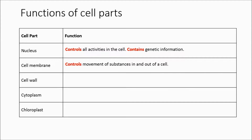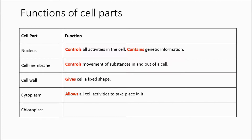Next, the cell membrane controls the movement of substances in and out of a cell. The cell wall gives the cell a fixed or regular shape. The cytoplasm allows cell activities to take place in it. The chloroplast contains chlorophyll and it allows photosynthesis to take place in it.